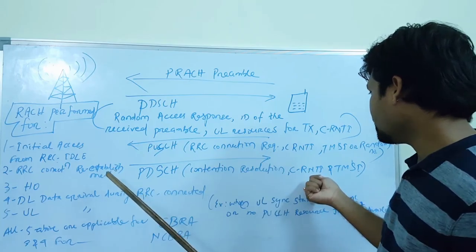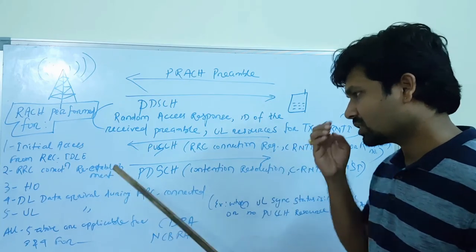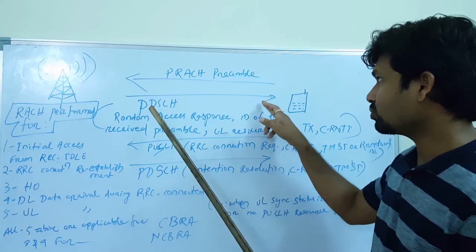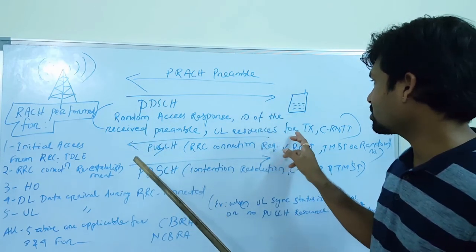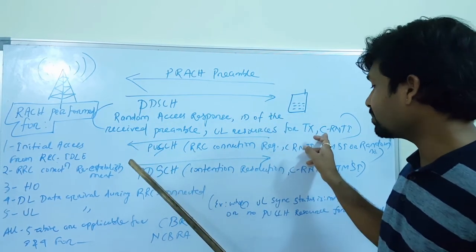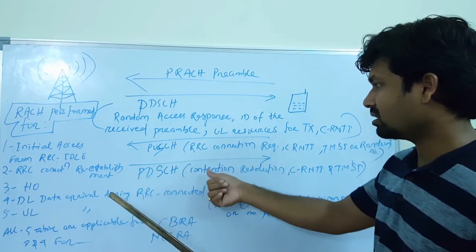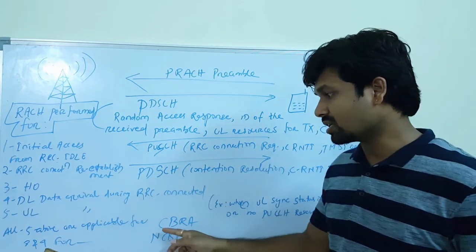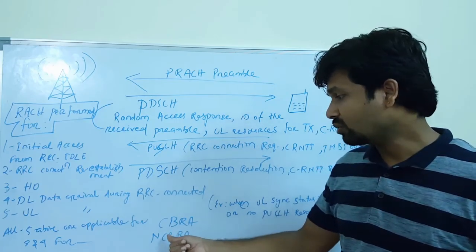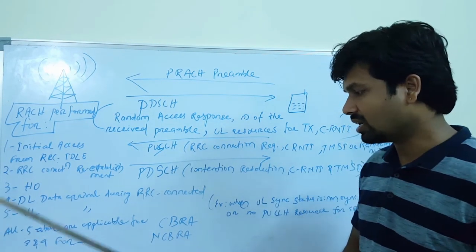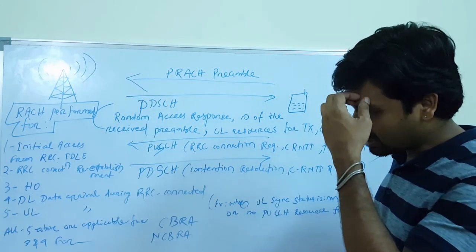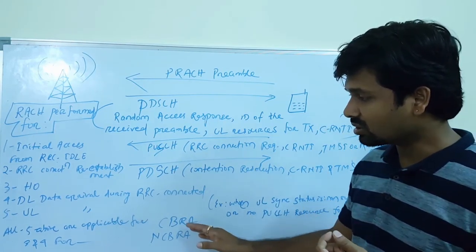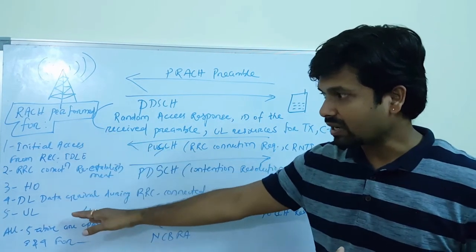In step four, the PDSCH contains contention resolution — meaning the C-RNTI is permanently allocated to the UE. So while in step two we receive a temporary C-RNTI, in step four the cell radio network temporary identity is allocated permanently during contention resolution.